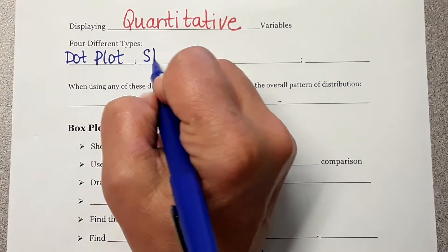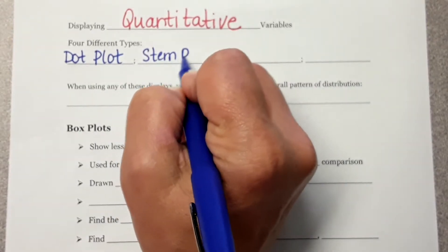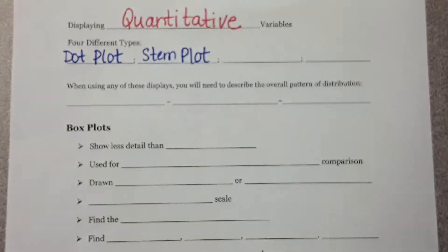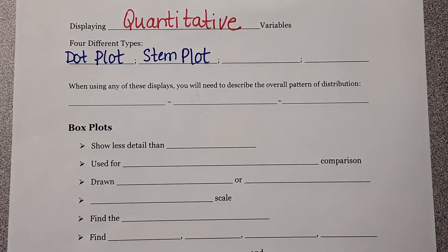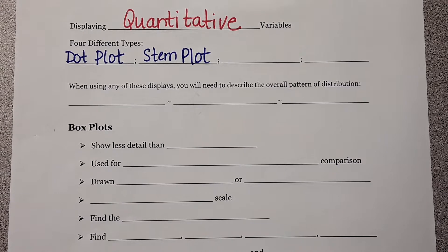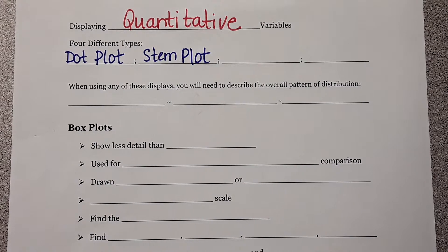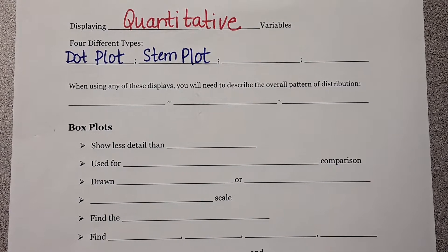The next one is a stem plot. I'll be honest — when I'm doing votes, because I'm a senior class advisor, this is what I do. I do a stem plot. I put my stems in order, I put my leaves in order, and I can figure out the top 15. Stem plot is also not very good for a lot of data, but very good for small sets of data.